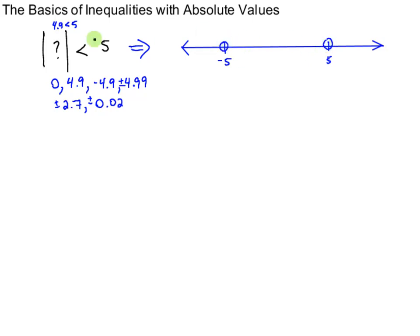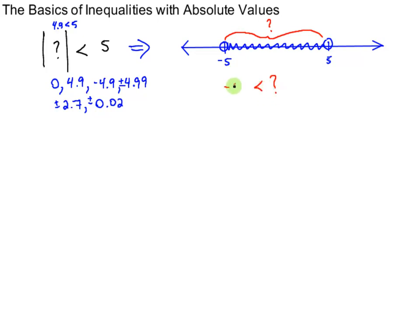It can't be 5 or negative 5 because the absolute value is less than 5. So if the absolute value is less than 5, then the thing inside — the question mark — could be anything between negative 5 and 5, but not including those numbers. A way to describe this in an inequality is to say question mark is greater than negative 5 and less than positive 5. That's a three-sided inequality, which is the same as those two inequalities intersected.